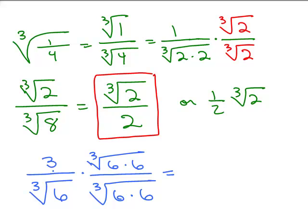What does that give me in the top? I've got a 3 on the outside and I've got the cube root of 36. There's no perfect cube in 36 because it's really 2 times 3 times 2 times 3. You only have 2 of any particular factor. On the bottom, I've got the cube root of 6 times 6 times 6. The cube root of 6 cubed is just 6.